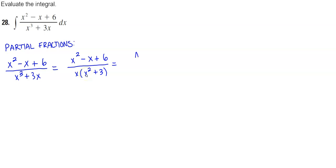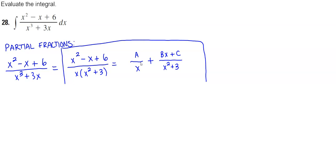That means it's going to be A over x plus — since x squared plus 3 cannot be factored any further — Bx plus C over x squared plus 3. This is our equation, and we want to multiply by the LCD, which is x times x squared plus 3.